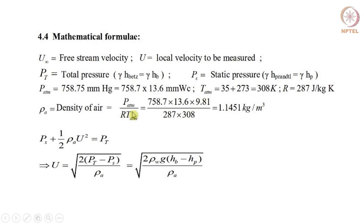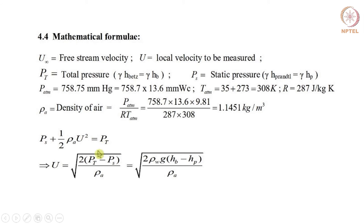The temperature of the atmospheric air is taken to be 35 degrees Celsius, which comes to 308 Kelvin. The most important equation used in this experiment to find the velocity in the wake region is derived by applying Bernoulli's equation. From this equation we can get the expression of velocity. Since we are using a digital manometer, we can get the velocity directly using the first expression without needing to go to intermediate expressions.